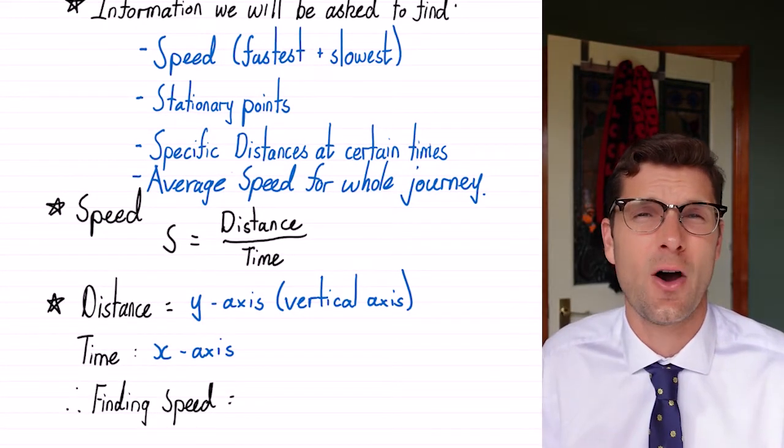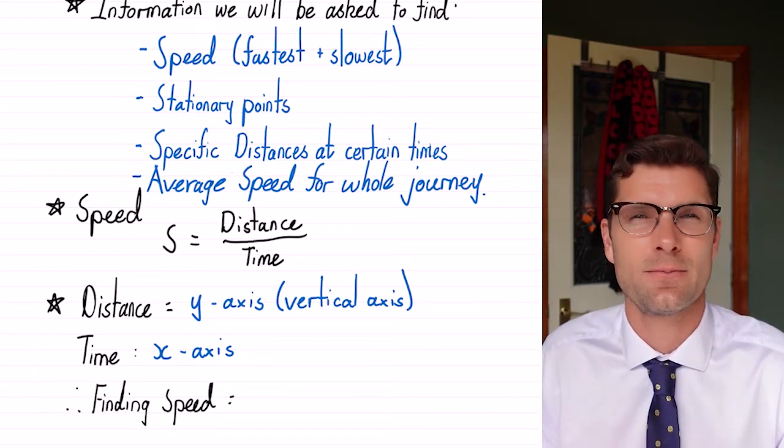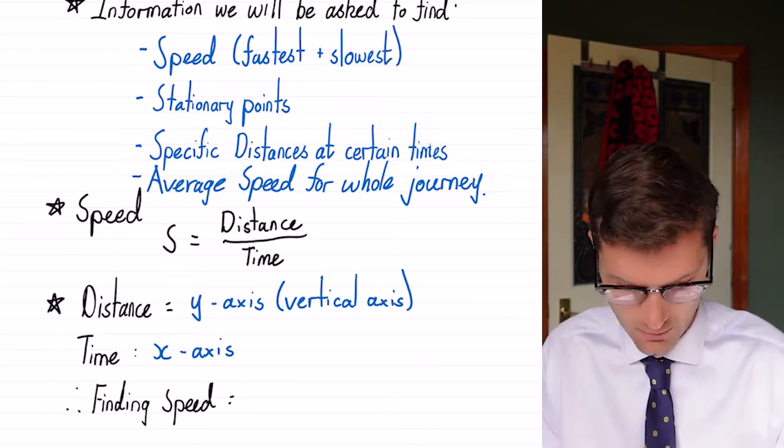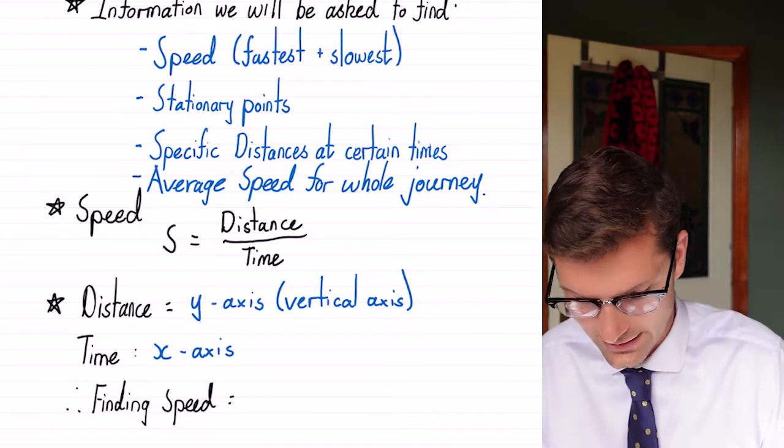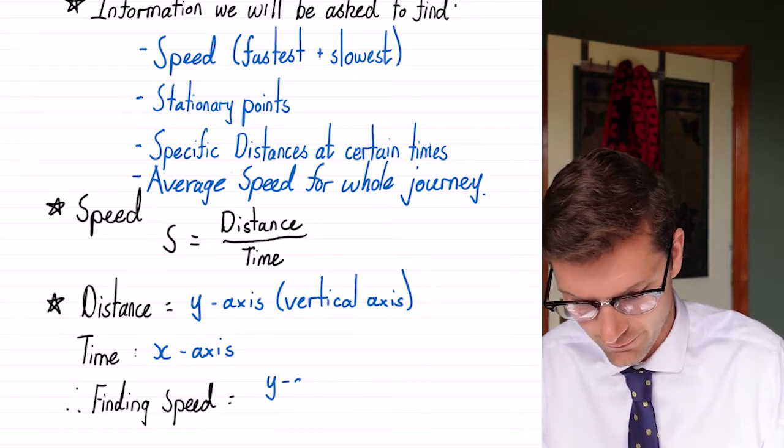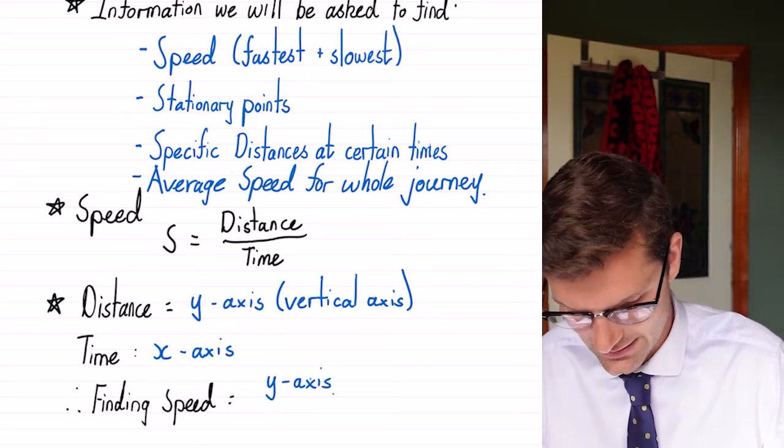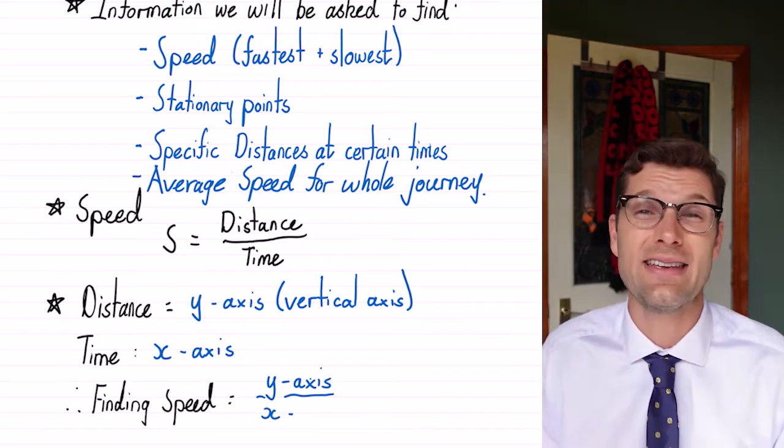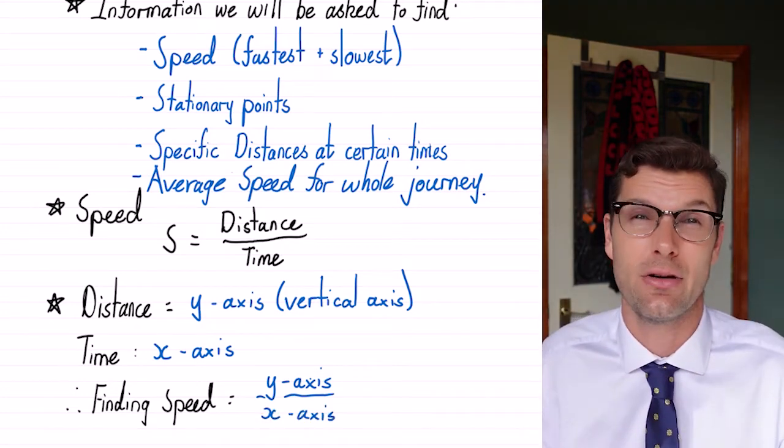So we can say that to find speed off a distance time graph, instead of saying distance over time, if you can see what the y-axis number is and you divide it by the x-axis number, you will always get the correct speed for that period of time.